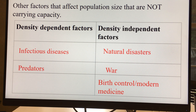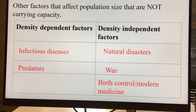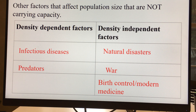Birth control keeps our population lower and keeps us from reaching the carrying capacity, while modern medicine keeps people alive longer — so with more people surviving for longer, we inch up closer to our carrying capacity.